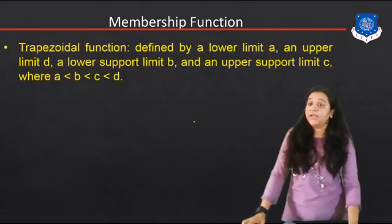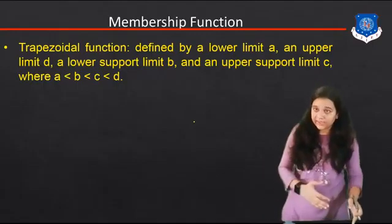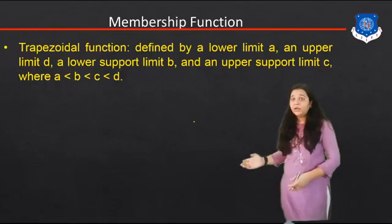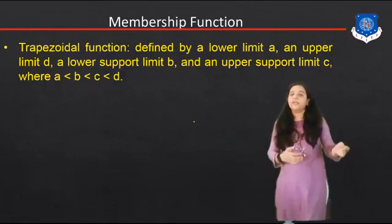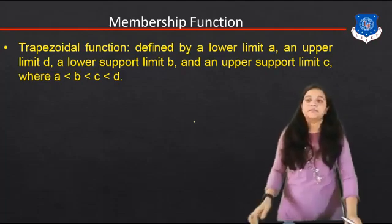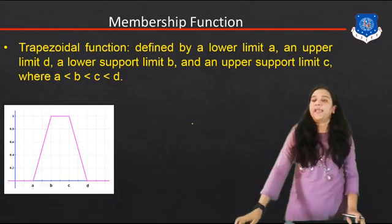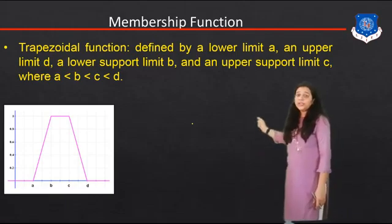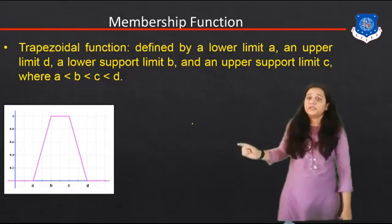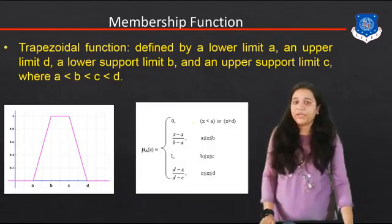The next membership function is the trapezoid function. It is defined by a lower limit A, an upper limit D, a lower support limit B, and an upper support limit C, where A < B < C < D. The graph looks like a trapezoid, where A is the lower limit, D is the upper limit, B is the lower support limit, and C is the upper support limit.